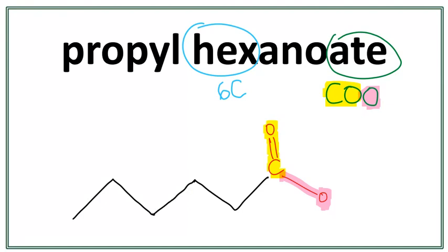Let's number these carbons. So the first carbon is always the carbon in the functional group. Right here. This is our first carbon. Second carbon. Third carbon. Fourth carbon. Fifth carbon. And the sixth carbon right here.